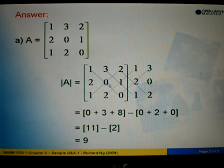So we take 1 times 0 times 0 will give us 0, plus 3 times 1 times 1 will give us 3, 2 times 2, 4, 4 times 2, 8. So we have finished with all the elements here. So we minus the elements here. We take 1 times 0 times 2, the answer is 0. And then 2 times 1, 2 times 1, 2. Plus 0 times 2 times 3 is 0.